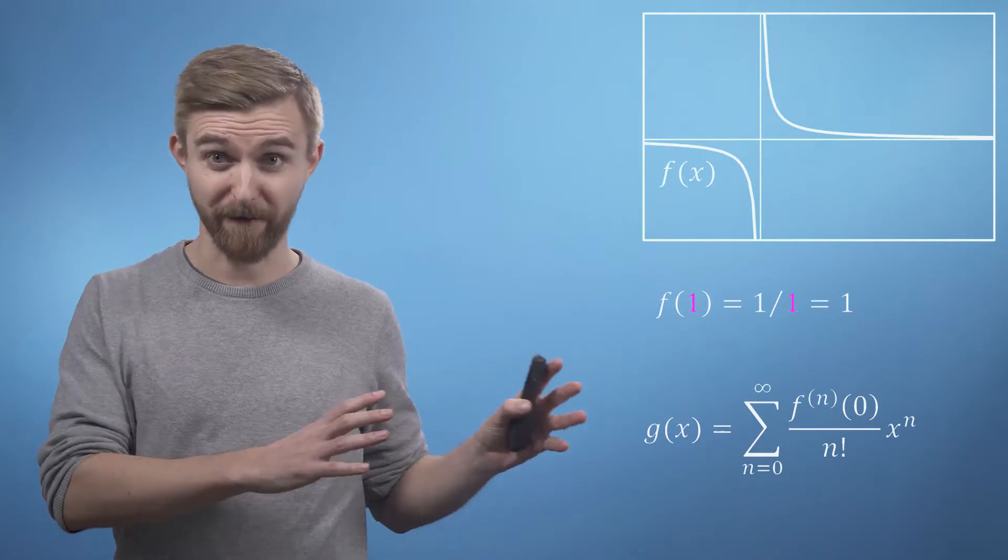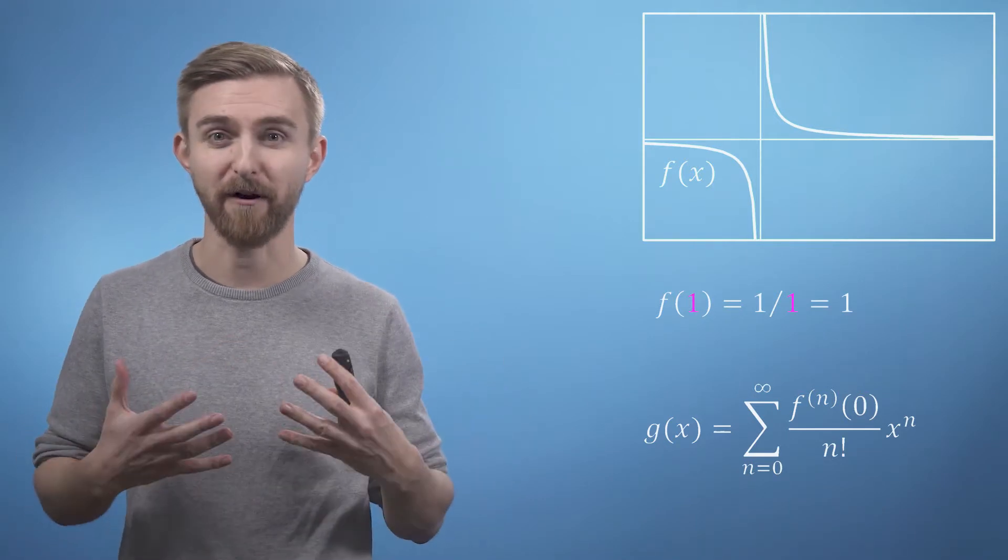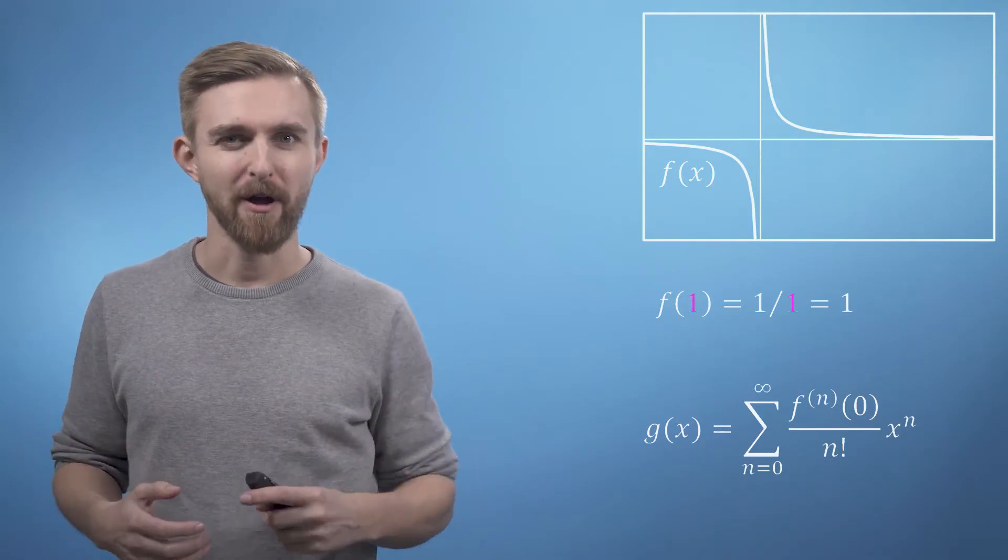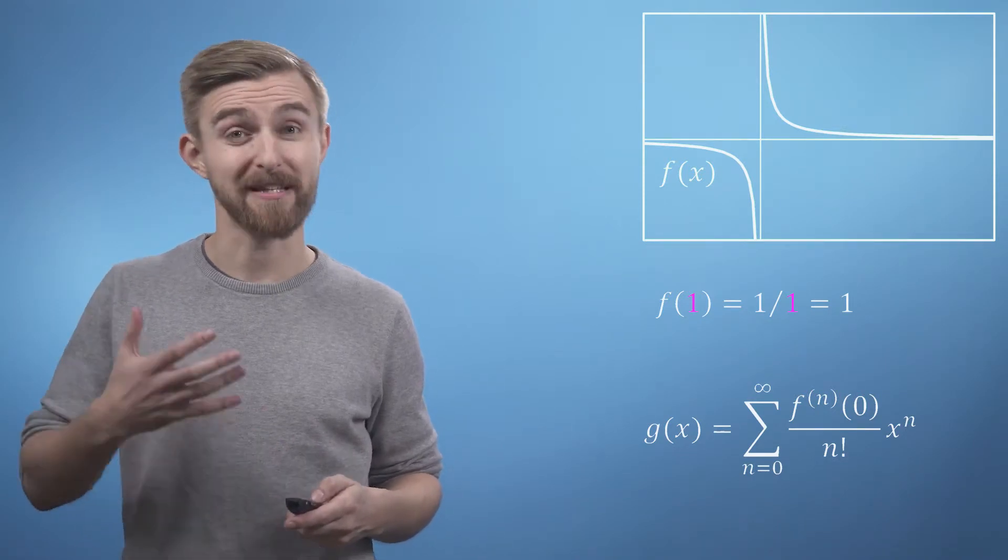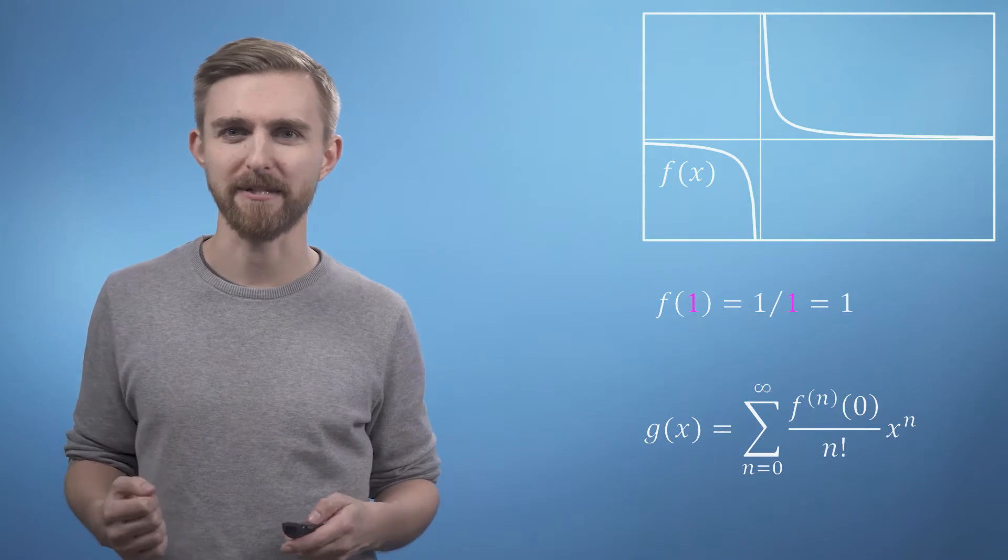Certainly it passes the first test of being able to evaluate the function at this point. However moving away from x equals 0 means that we're now going to need to use the Taylor series instead of the Maclaurin series.